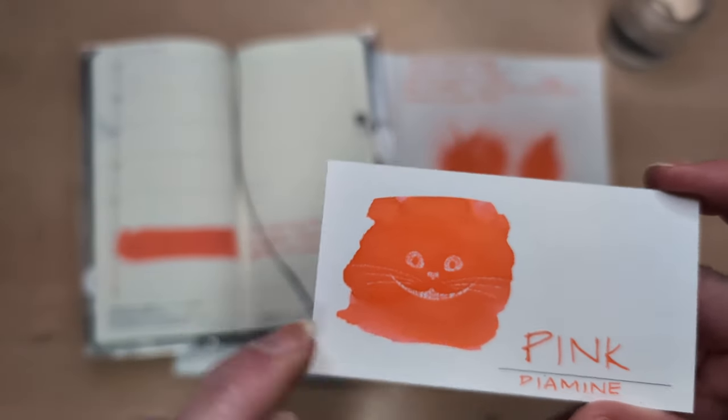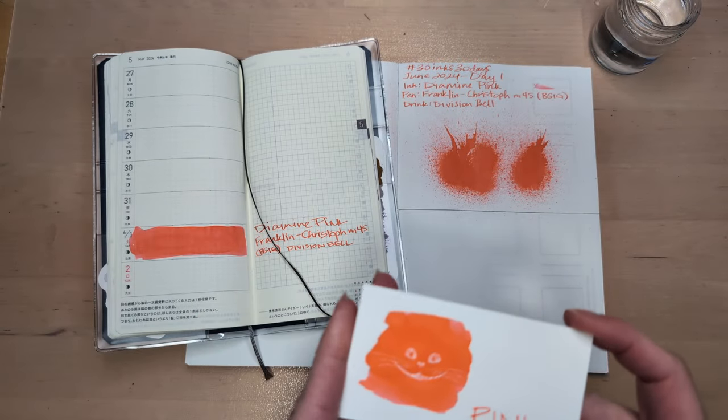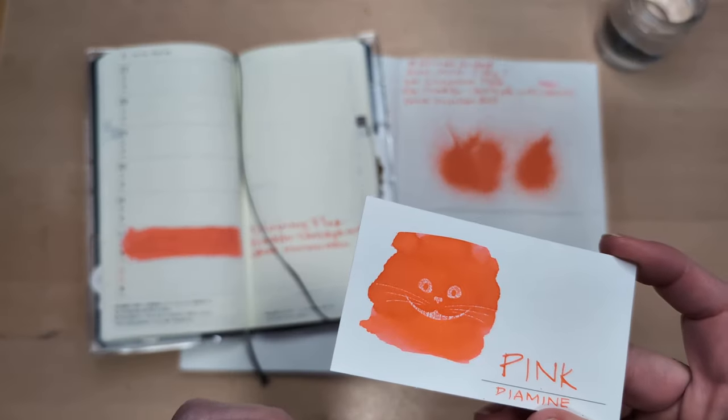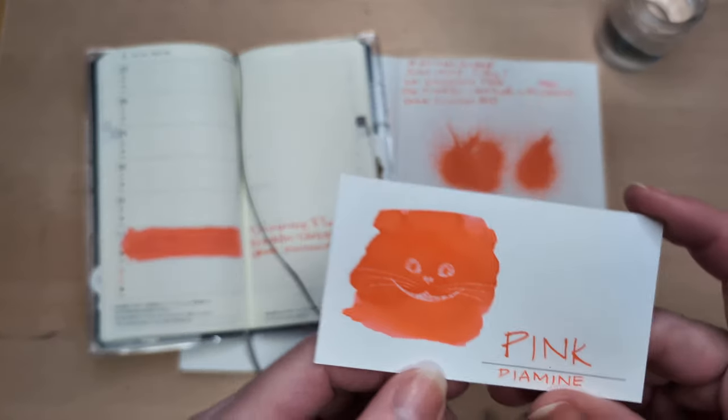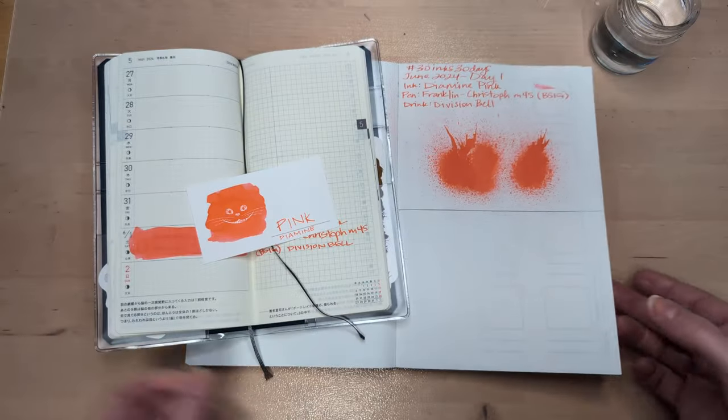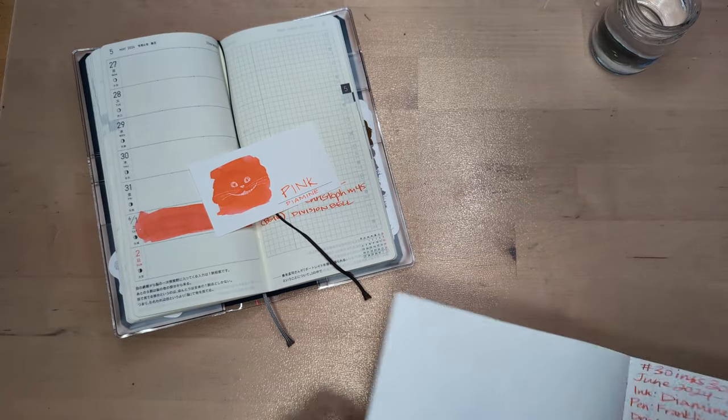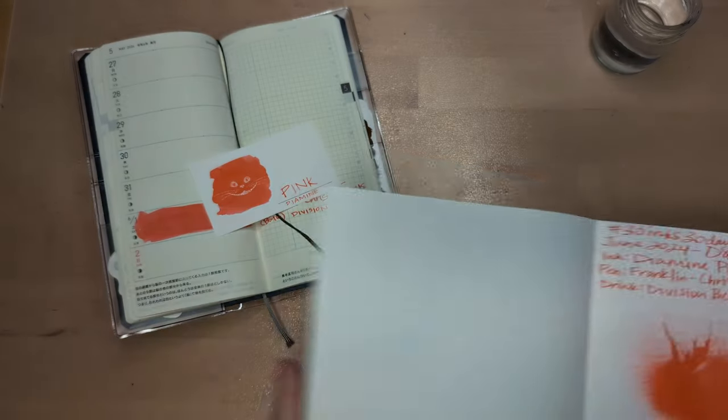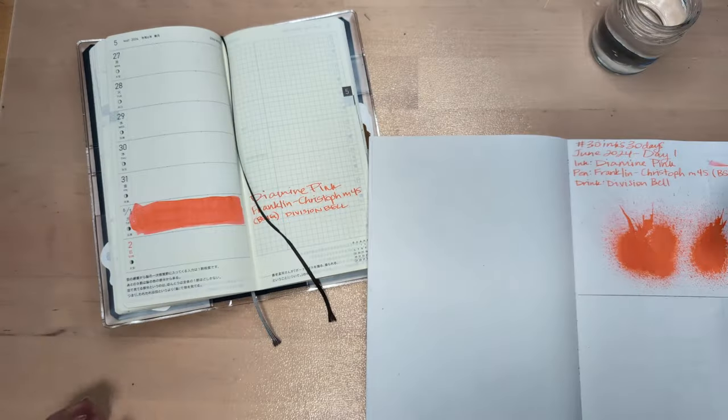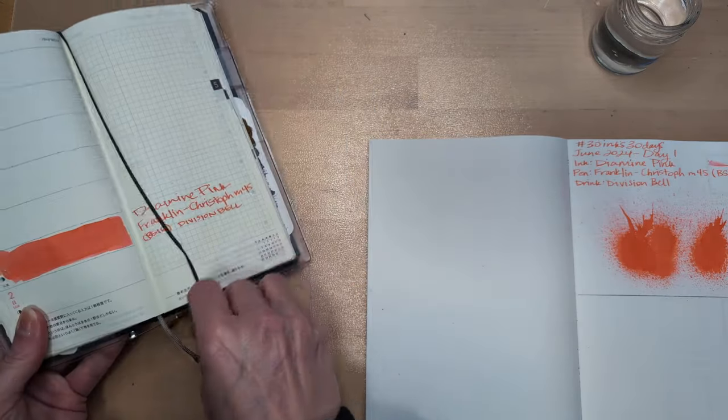What's interesting is in the water you definitely get like a fuchsia or magenta coming out, fluorescent pink, and there's almost a gold sheen on the heavy parts here. But that's yesterday, let's go to today.